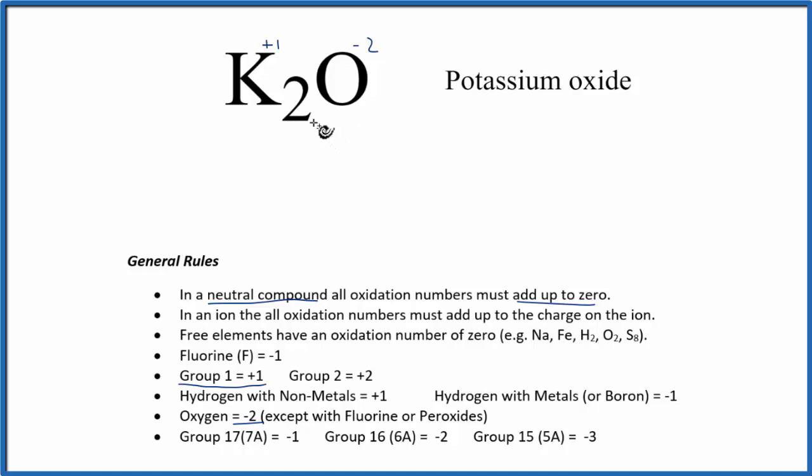Let's check and make sure we got it right, though, because everything should add up to zero. So I have two of the potassiums, they're plus one, plus I have the one oxygen, which is minus two. Plus two and a minus two, that gives us zero.